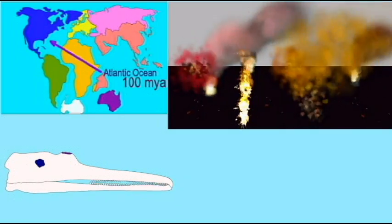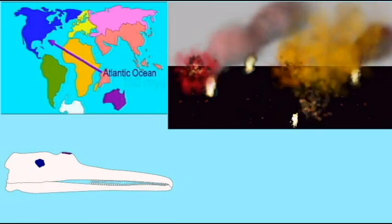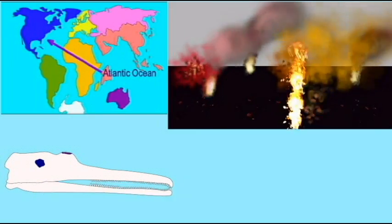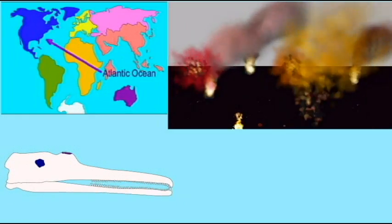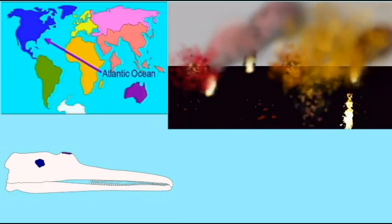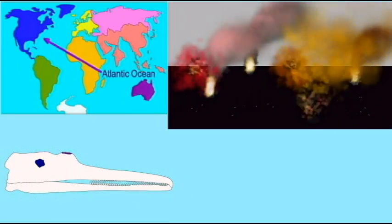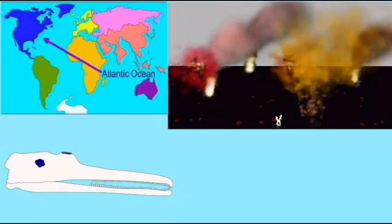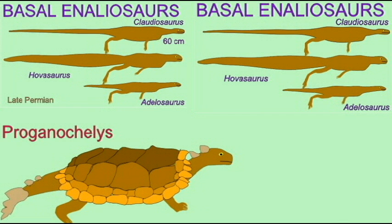This may not have been the largest volcanic eruption in history by volume, but it certainly was the greatest in terms of total area. This huge area of volcanic activity going on for thousands of years would break up a supercontinent, would begin the formation of the Atlantic Ocean, and was undoubtedly the principal cause of the end Triassic extinction in which half of Earth's life died out.